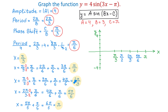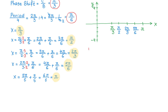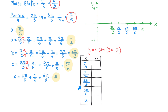Next we will take these x-values, replace them in the function y equals 4 sine of 3x minus pi, and find the y-values using a table. For the first point, replacing x with pi over 3: y equals 4 sine of 3 times pi over 3 minus pi. The 3s cancel, and pi minus pi is 0. Then 4 sine of 0 is 0. So the first y-coordinate is 0, and here on the x-axis we have the first point of the cycle.